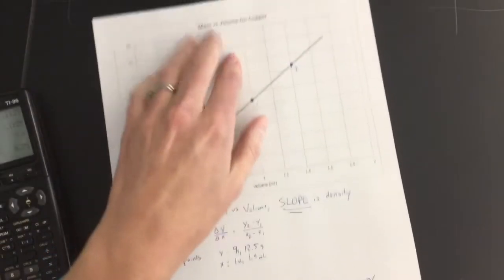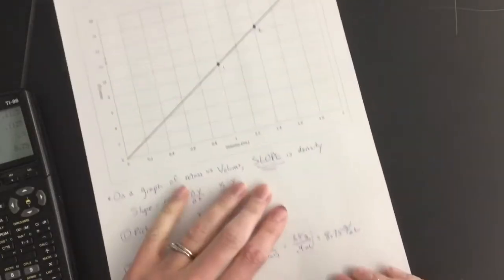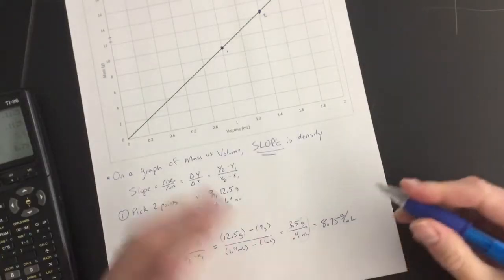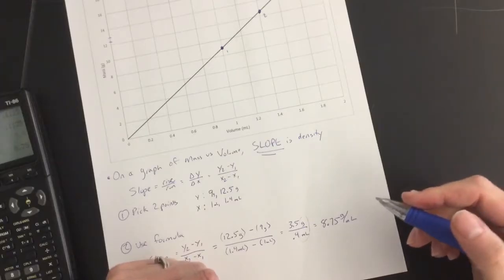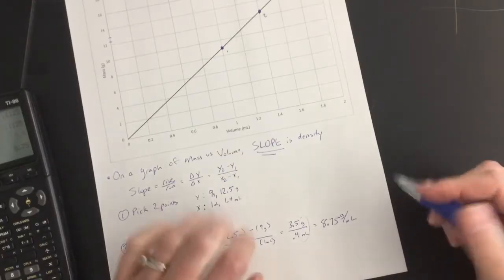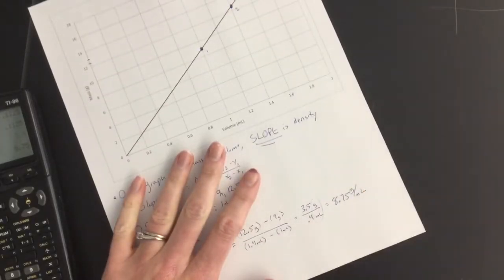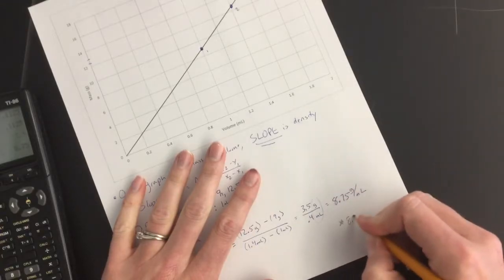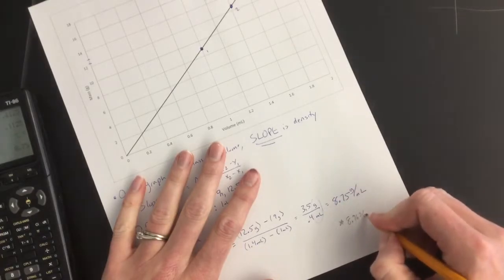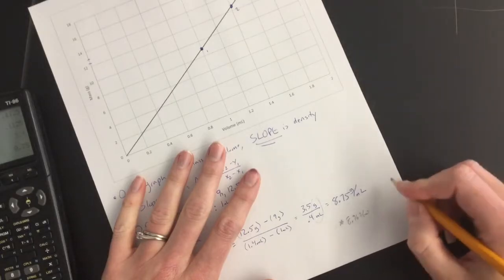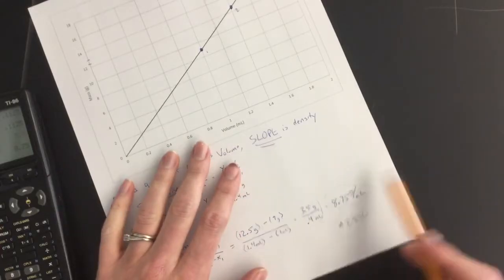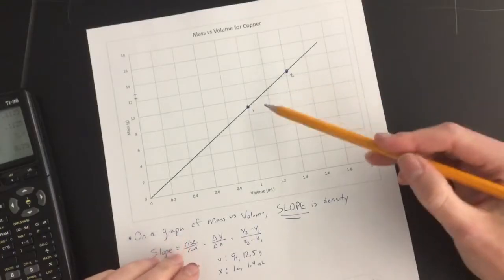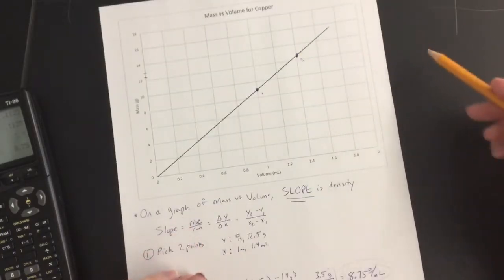Now, I realize this is copper, and so we would probably have used centimeters cubed instead of milliliters, but perhaps this was measured by water displacement, and that's why there's milliliters there. I also happen to know off the top of my head, because I'm a crazy chemistry teacher, that the density of copper is 8.96 grams per centimeter cubed, which is pretty close. Remember that when you're using a graph, and you're estimating where these points are, that it's not going to be exact, and that's okay.